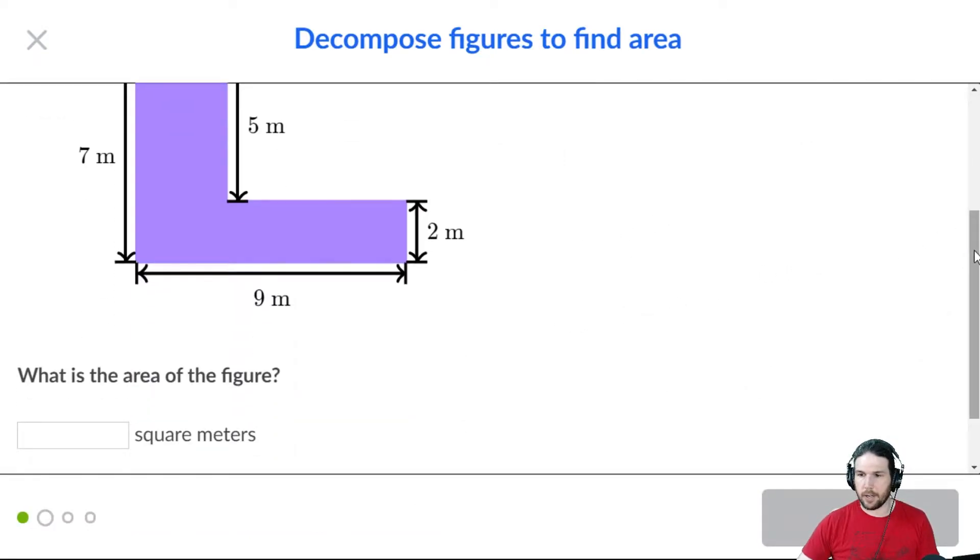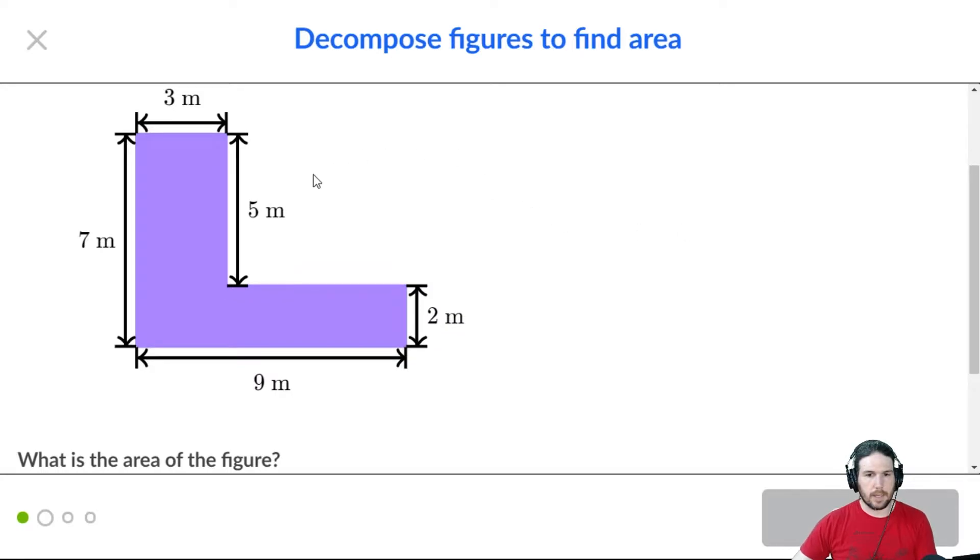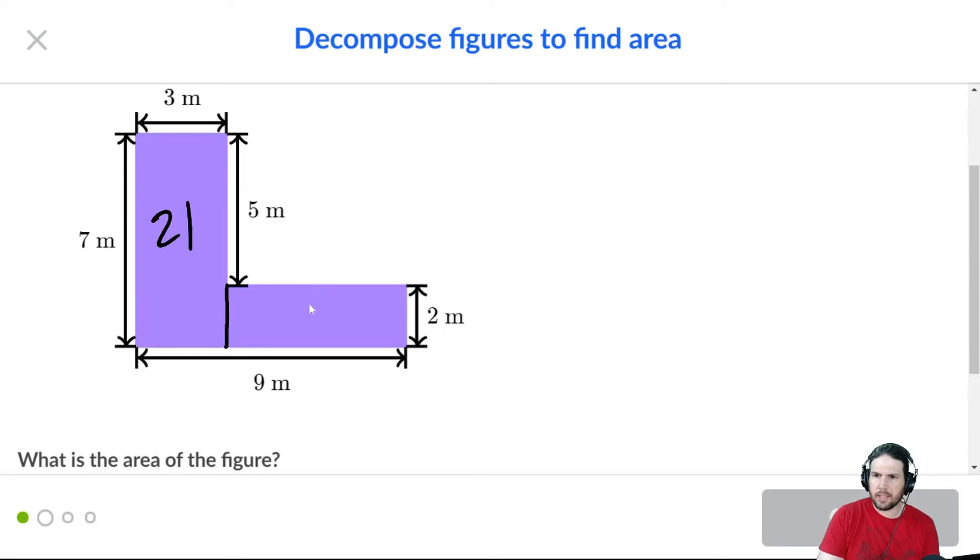What's the area of this figure? Well, this is actually kind of a tough one because not all the information is obvious. I'm going to split it down like this. And this rectangle is easy. Seven by three is 21. But what about this one?